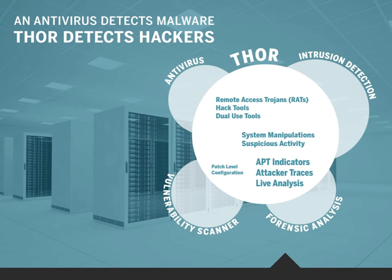People often ask us about the differences to antivirus solutions, and what we typically respond is: an antivirus detects malware, Thor detects hackers. Thor covers and extends the features of different security solutions. It detects certain types of malware like an antivirus but is specialized in remote access tools, RATs, hack tools and dual-use tools. In contrast to antivirus solutions, Thor does not have to be unambiguous in its detection — it is a valid response to report an object as suspicious. It detects system manipulations like replacement of system files and suspicious activity from event logs and caches. Thor reports indicators of compromise, detects dumps and tool outputs, traces in log files or even free disk space of a system partition, and performs some vulnerability checks on configurations or services often used by attacker groups.